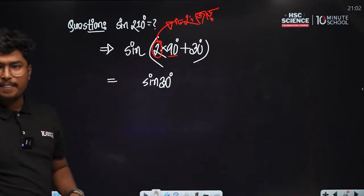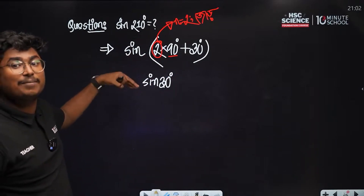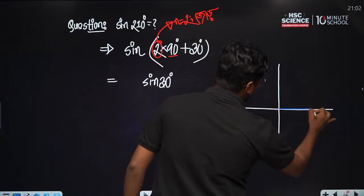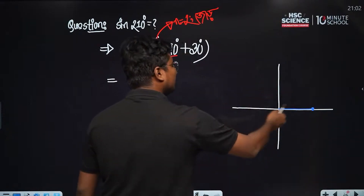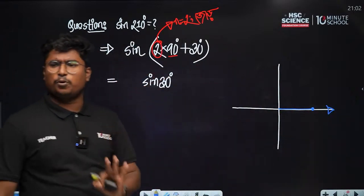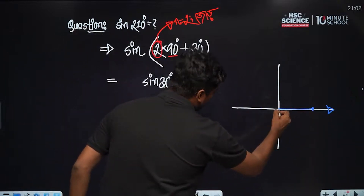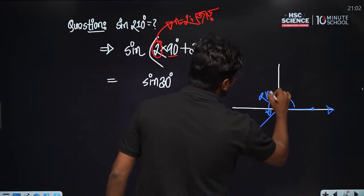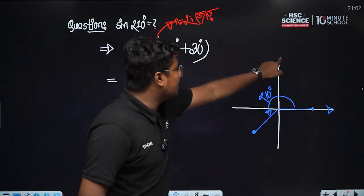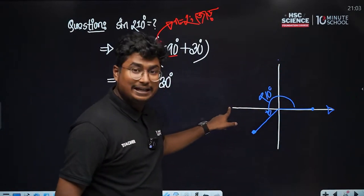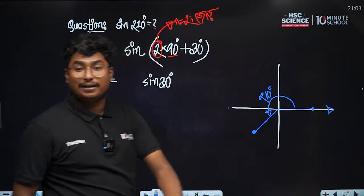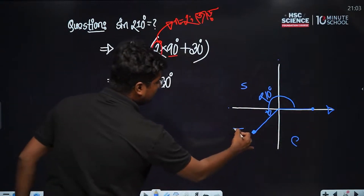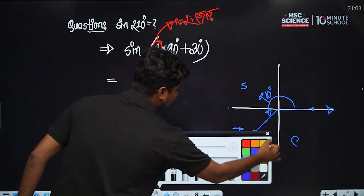If sin(30°) is plus or minus, then we learned that one quadrant is 180 degrees. If we cross one quadrant from 180 degrees, that is the sign positive. So, since we have a negative sign here, we say minus sin.